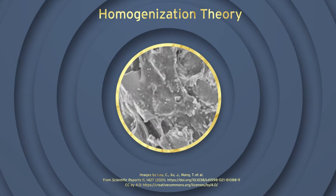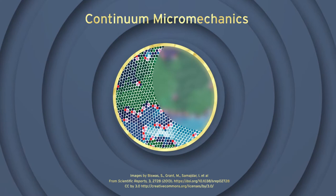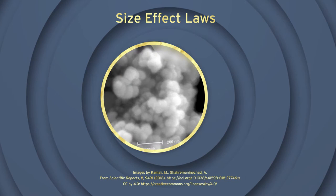Traditionally, there are theories like homogenization theory, where you smear out over the microstructure, or very related to this, continuum micromechanics, where you use continuum mechanics not only at the macro scale but at different lower scales, extending its applicability. Or size effect laws, where you discuss how properties change depending on how large the samples are on which you test them.